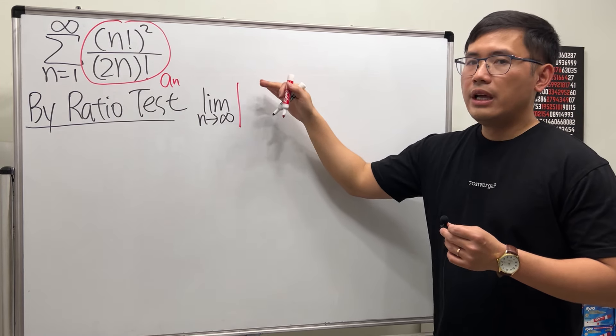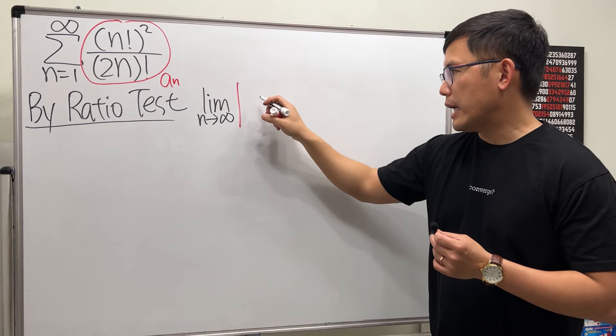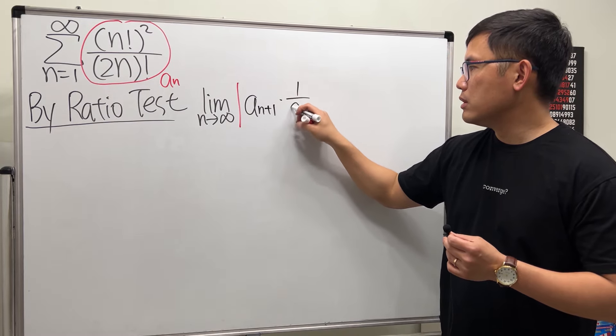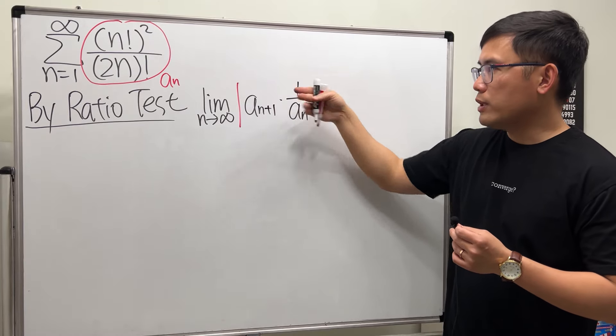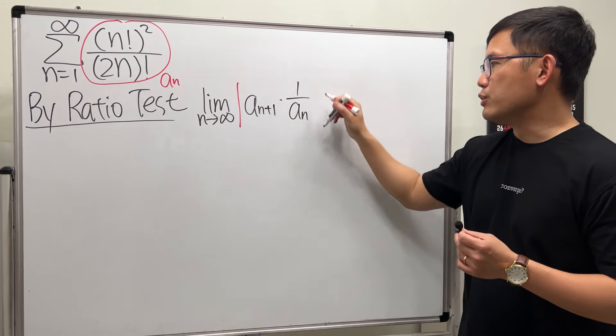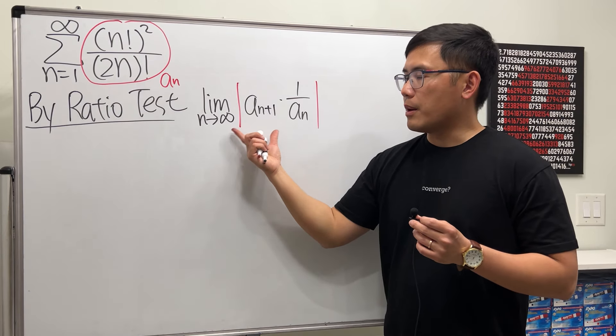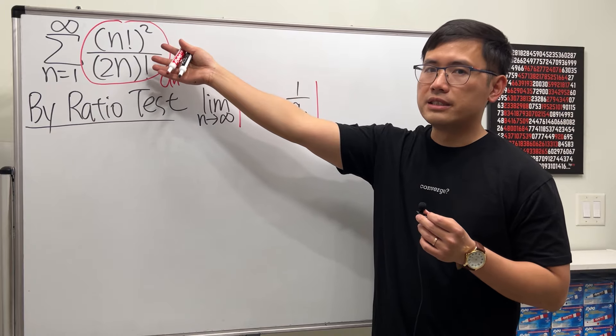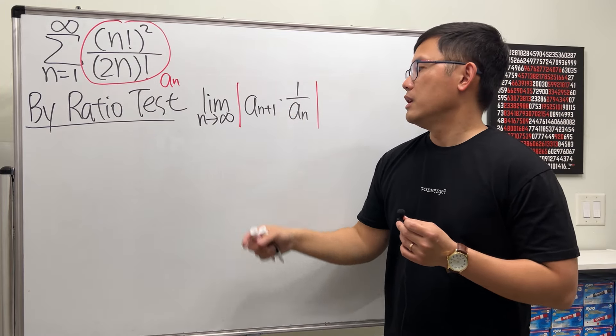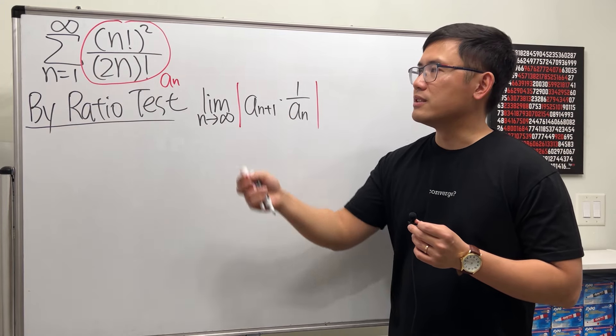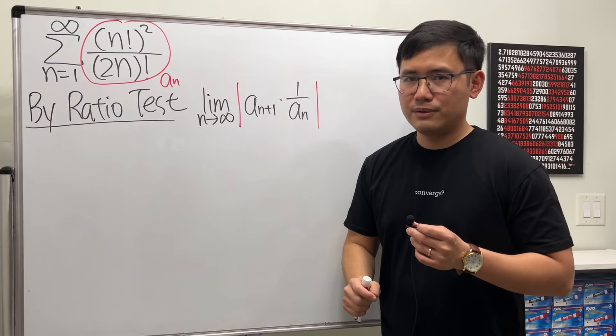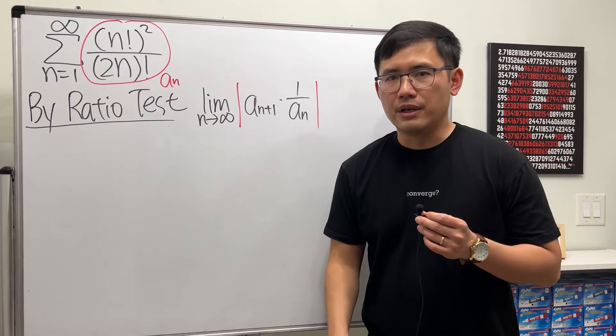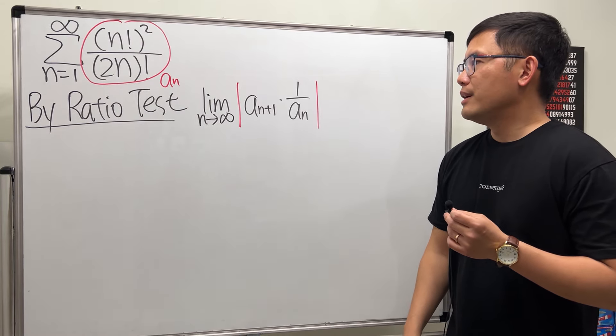We write a_(n+1) times the reciprocal of a_n. This will remind you to do the reciprocal; it's easier to set up this way. And after we compute this limit, if we get a limit that's less than 1 that means we can say this series converges. If this limit is greater than 1, then we can say that series diverges. If this right here is equal to 1, then we have to try something else because the ratio test is inconclusive.